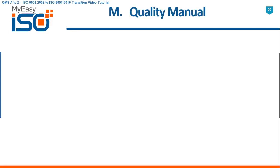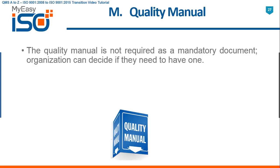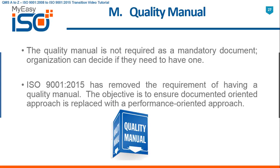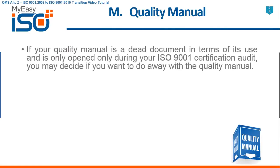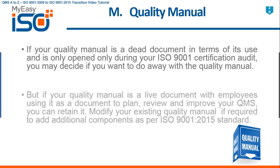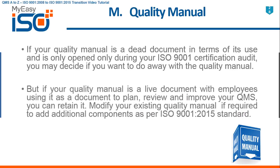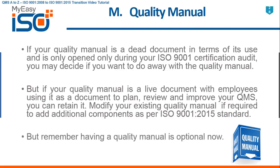M — Quality Manual. The quality manual is not required as a mandatory document. The organization can decide if they need to have one. ISO 9001 2015 has removed the requirement of having a quality manual. The objective is to ensure a documented-oriented approach is replaced with a performance-oriented approach. If your quality manual is a dead document only opened during your ISO 9001 certification audit, you may decide to do away with it. But if your quality manual is a live document with employees using it to plan, review, and improve your QMS, you can retain it. Modify your existing quality manual if required to add additional components as per ISO 9001 2015 standard. Remember, having a quality manual is optional now.